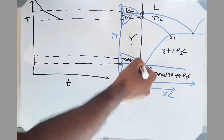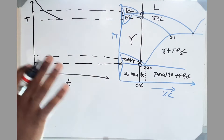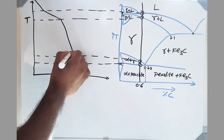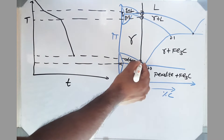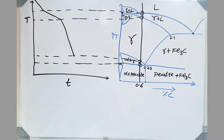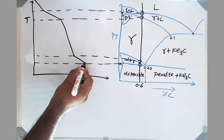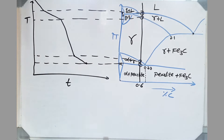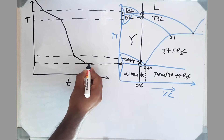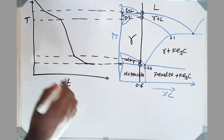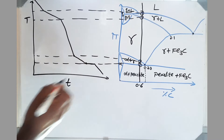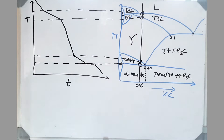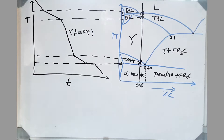From that point on we have a single-phase region, which cools like a pure metal until the next point. Now again we have a two-phase region where gamma is giving gamma plus alpha. This temperature is the eutectoid temperature. Here the slope remains constant for a certain time — I will explain why — and then the slope again goes down. Now we have our complete cooling curve.